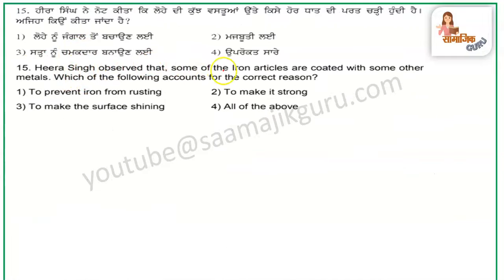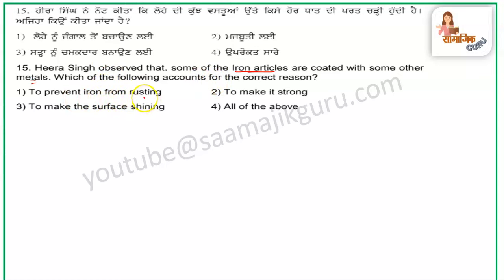Hira Singh observed that some iron articles are coated with some other metal. Which of the following gives the correct reason? The correct reason is to prevent iron from rusting.